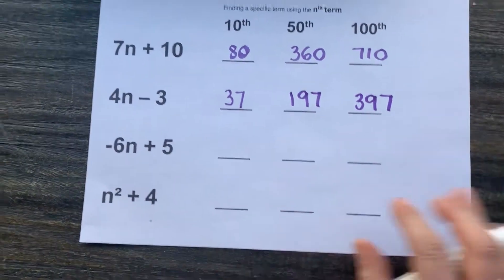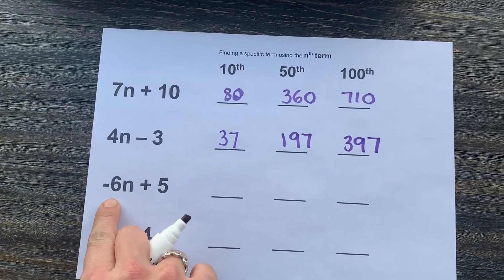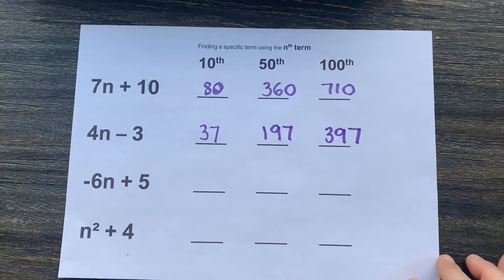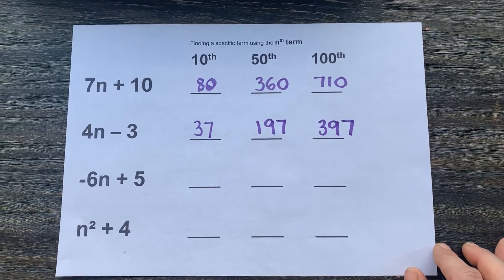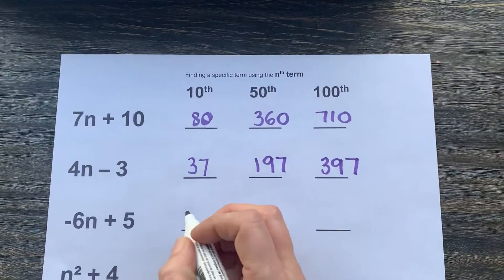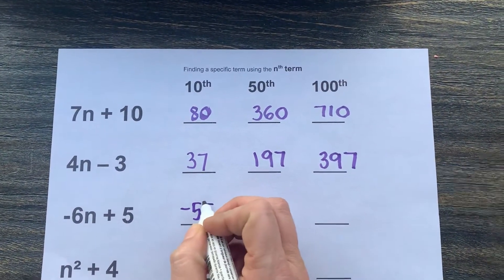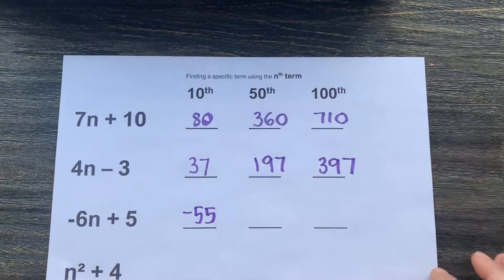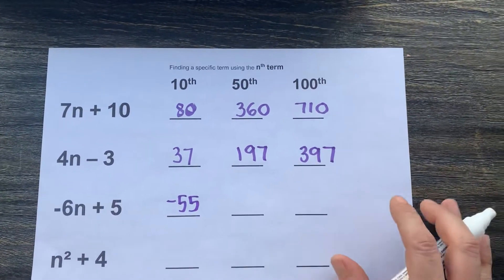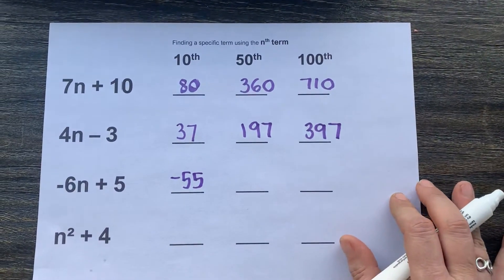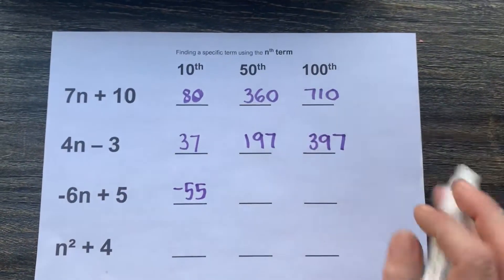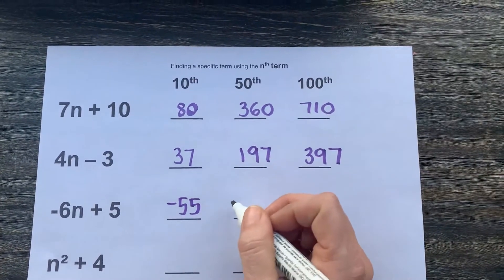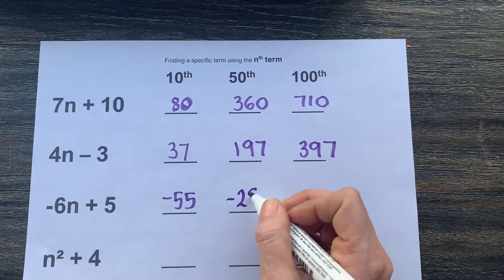We can do the same thing when we have a negative number here as well. So this time, we're going to plug 10 in for n. Minus 6 times 10 is minus 60, add 5 would be minus 55. Remembering that when we multiply a negative number by a positive number, our result will be negative. For the 50th term for this sequence, you would do minus 6 times 50, which would be minus 300, add 5 would be minus 295.